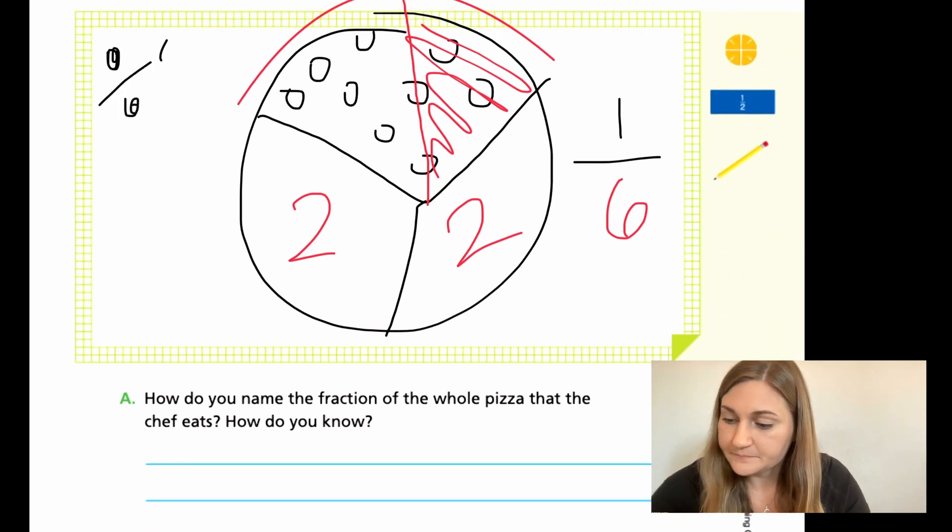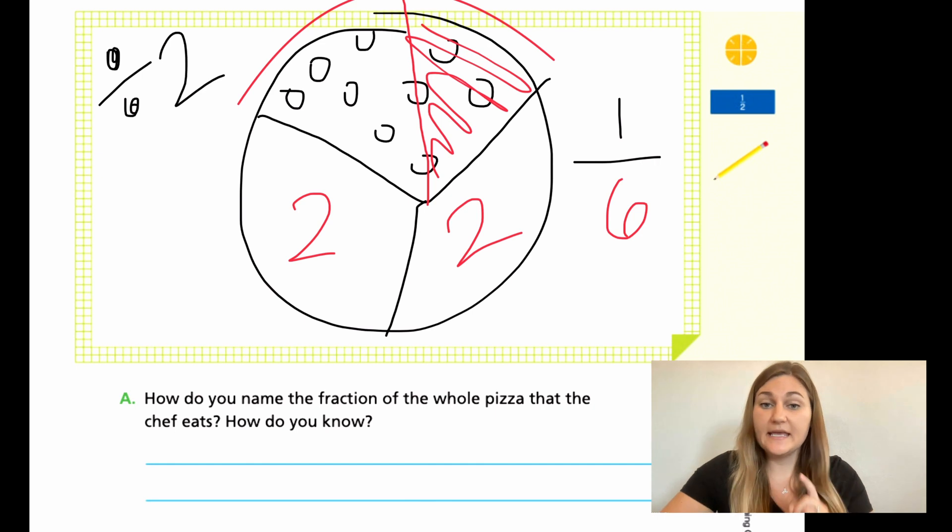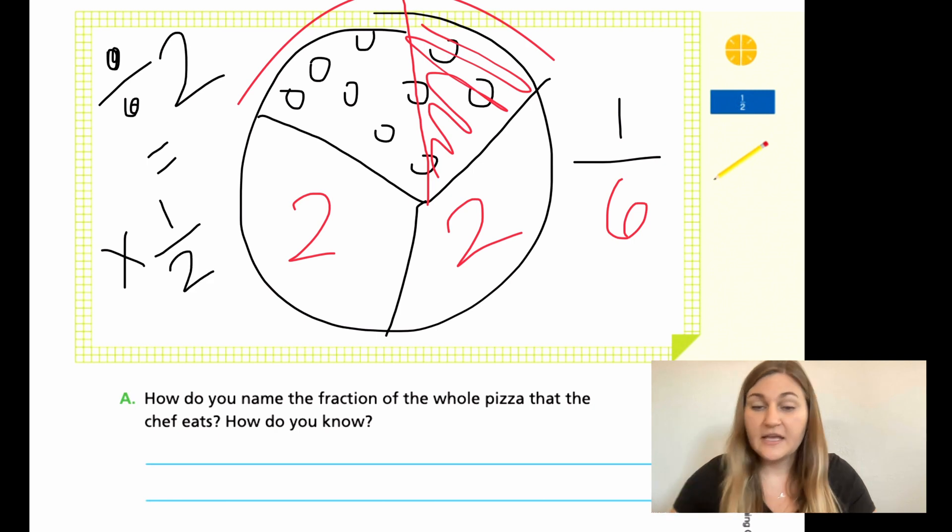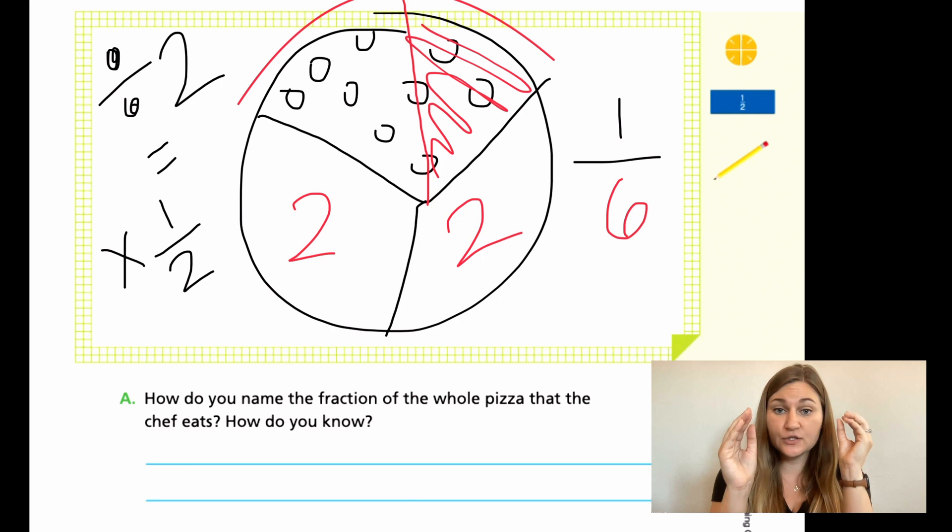So dividing by two is the exact same thing. It is equal to multiplying by a half. If you take a whole and you divide it into two pieces, you just got halves. So dividing into two makes halves. It's the same thing as multiplying by a half.